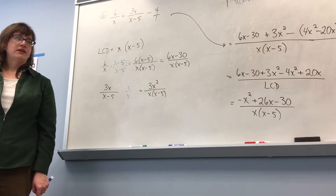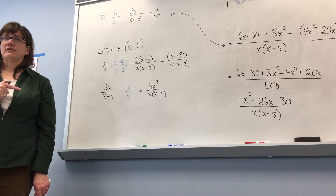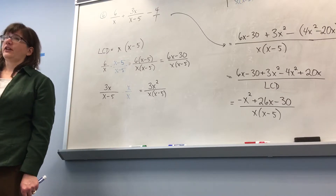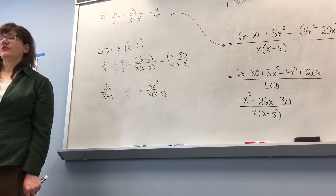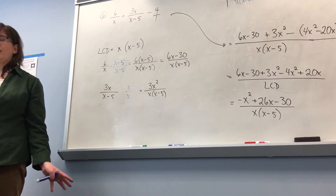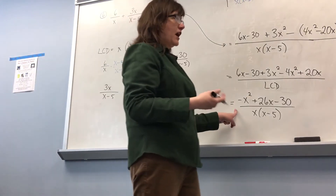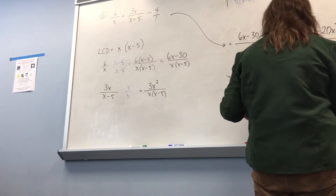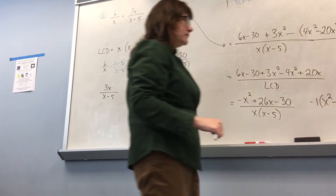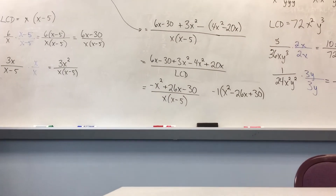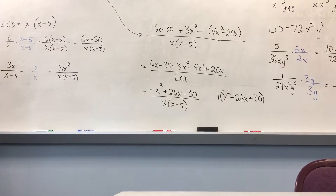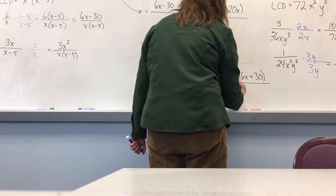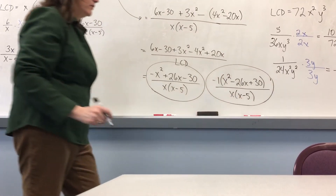Now we need to see if there's anything we can do to simplify. Am I going to be able to factor the top so I can cancel something? When in doubt, factor it out. First thing I'd do is factor out the negative 1, which leaves a positive x squared minus 26x plus 30. That makes it easier to see I'm not going to be able to factor it further. So you can leave your answer like this — factoring out the negative 1 is also acceptable.